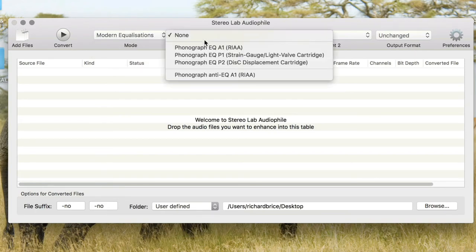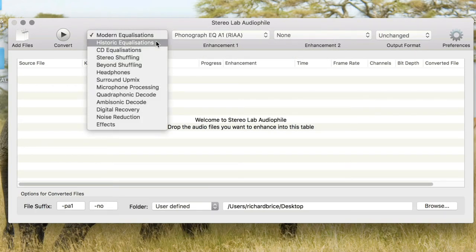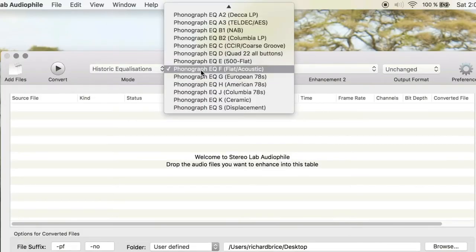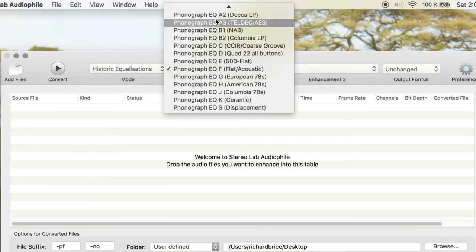We're looking at RIAA, that's modern equalization. Looking at historic, we have a whole range of historic: DECA, TELDEC, NAAB, Columbia.